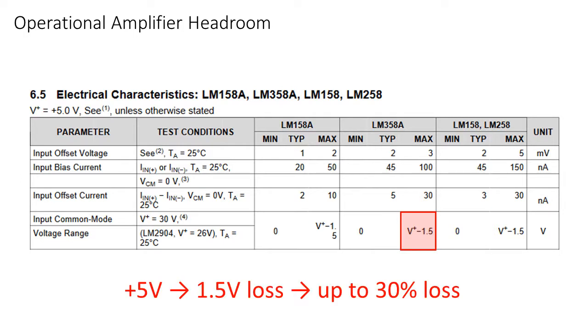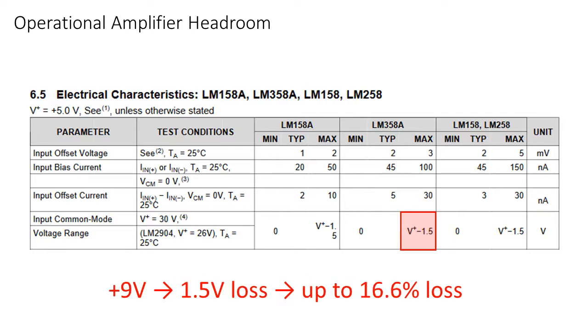For a digital system, this means that the maximum range is from 0 to 3.5V. And on a 9V battery, we get a range from 0 to 7.5V.